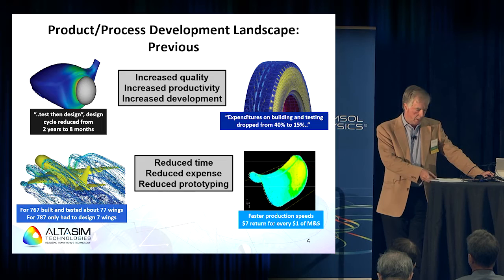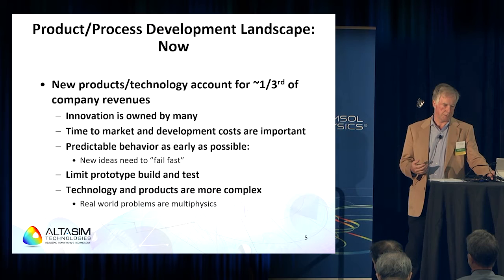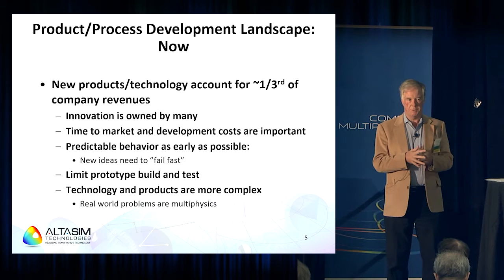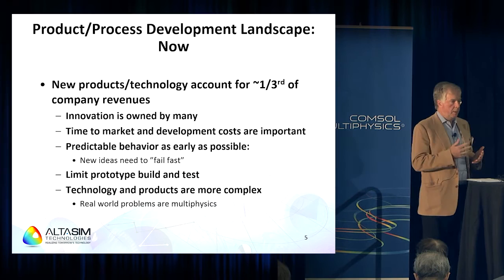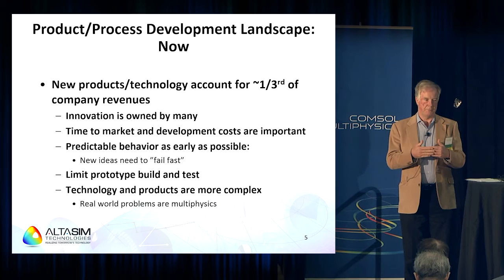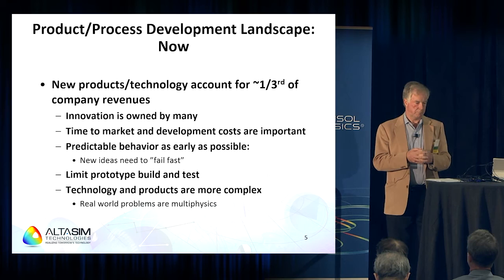Larger companies recognized this for a long time, but more recently — over the last two to four years — it's started to cascade down and other companies have begun using computational simulation. It's important that they do, because new products and technology account for about 30% of annual revenues across various companies. This means innovation has to continue — it can't be stagnant. You have to innovate every year, and it's owned by many people, not just a single individual or company.